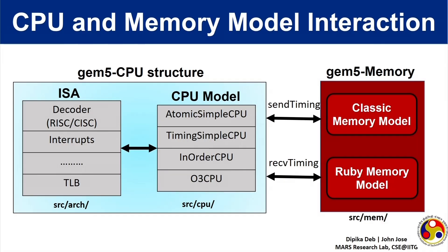As a quick recap of the previous video on GEM5, the figure shows how a CPU and memory interact in GEM5. The CPU memory interaction works in a master-slave fashion where the CPU is the master and it requests something from the memory. The memory executes the request and replies back to the CPU.